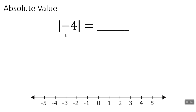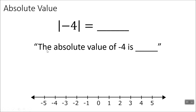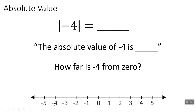The absolute value of negative 4 — these bars around the number mean the absolute value of negative 4. So this whole statement is saying: the absolute value of negative 4 is something. This blank line just means fill in the blank. So what we're going to do is look down here on the number line, figure out where negative 4 is, and see how far negative 4 is from 0.